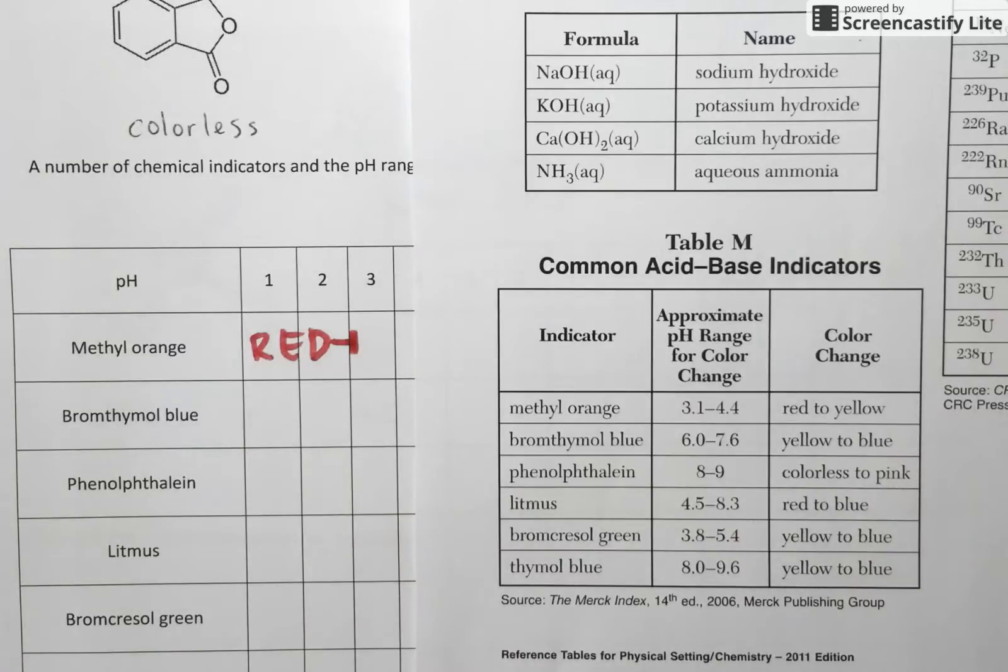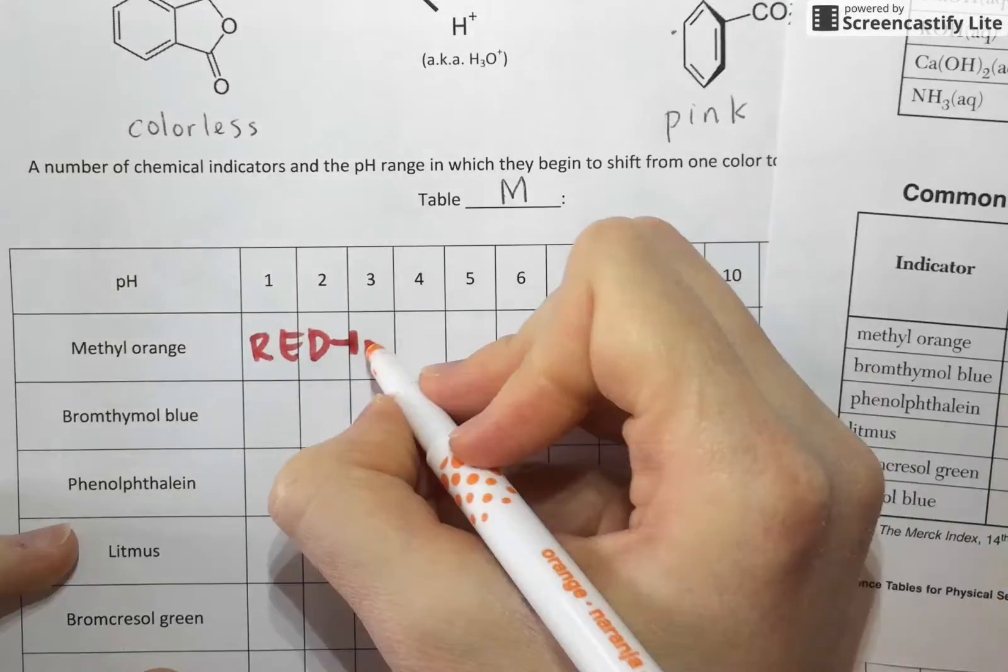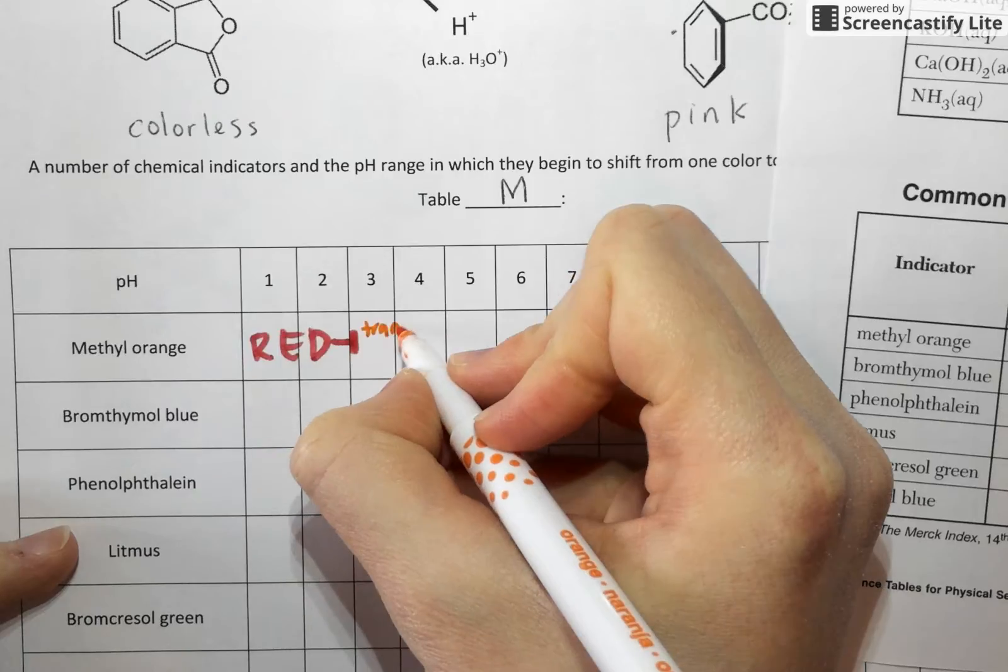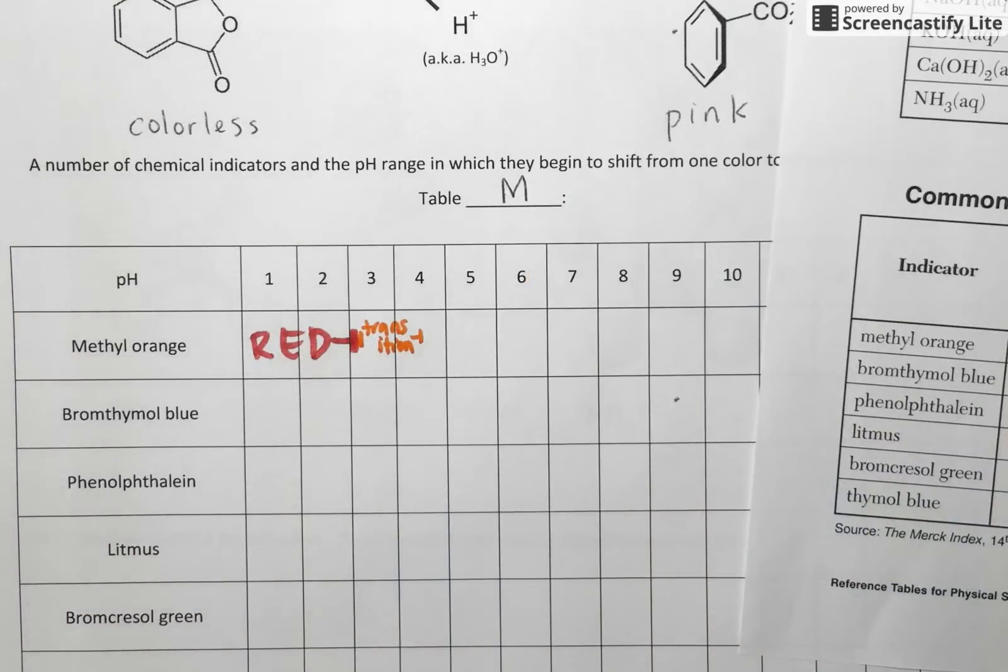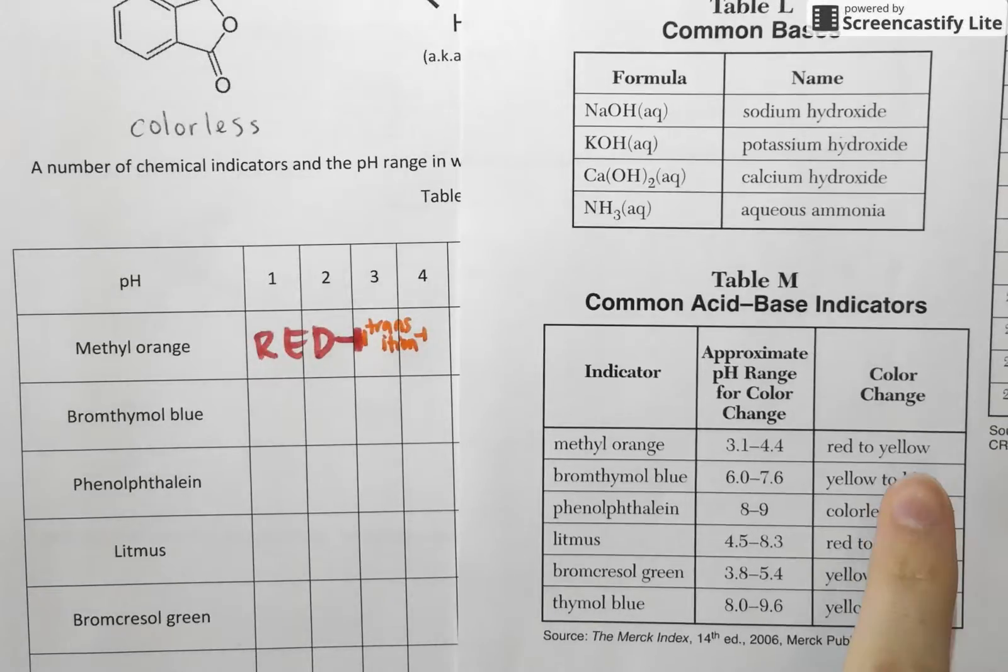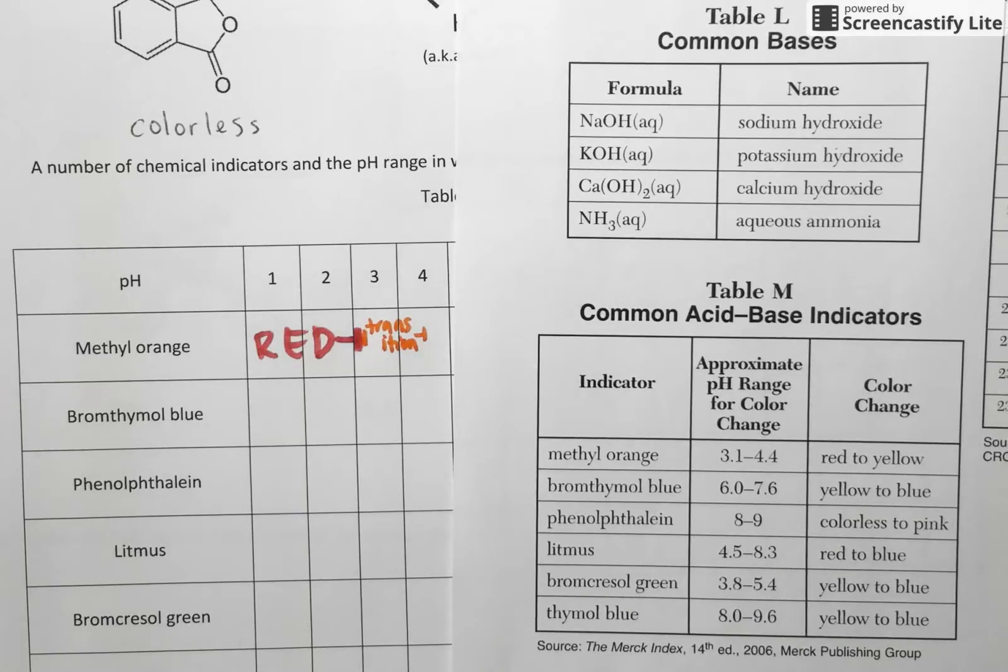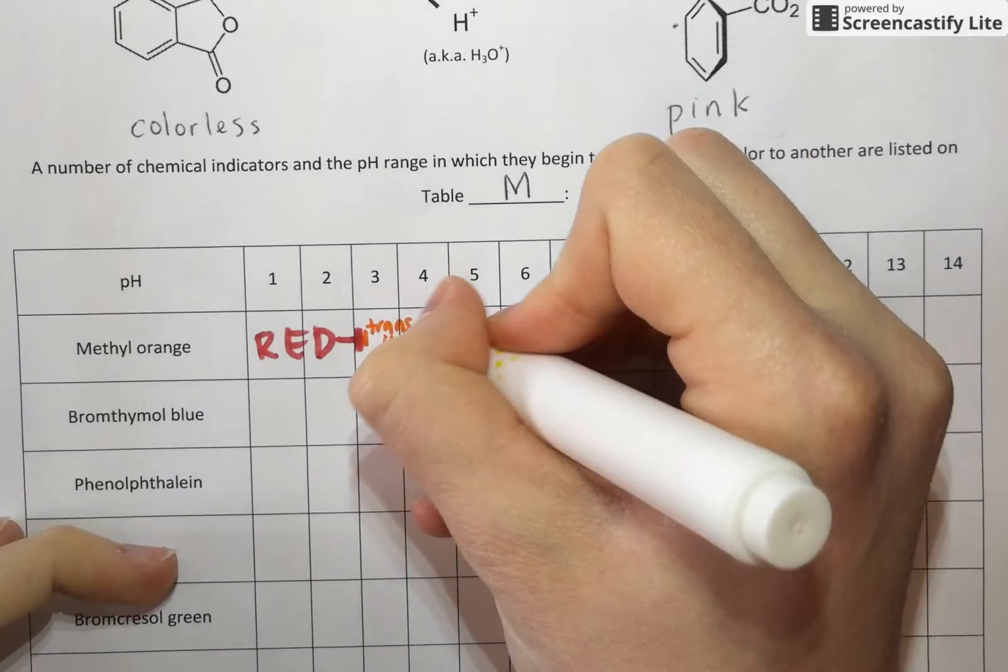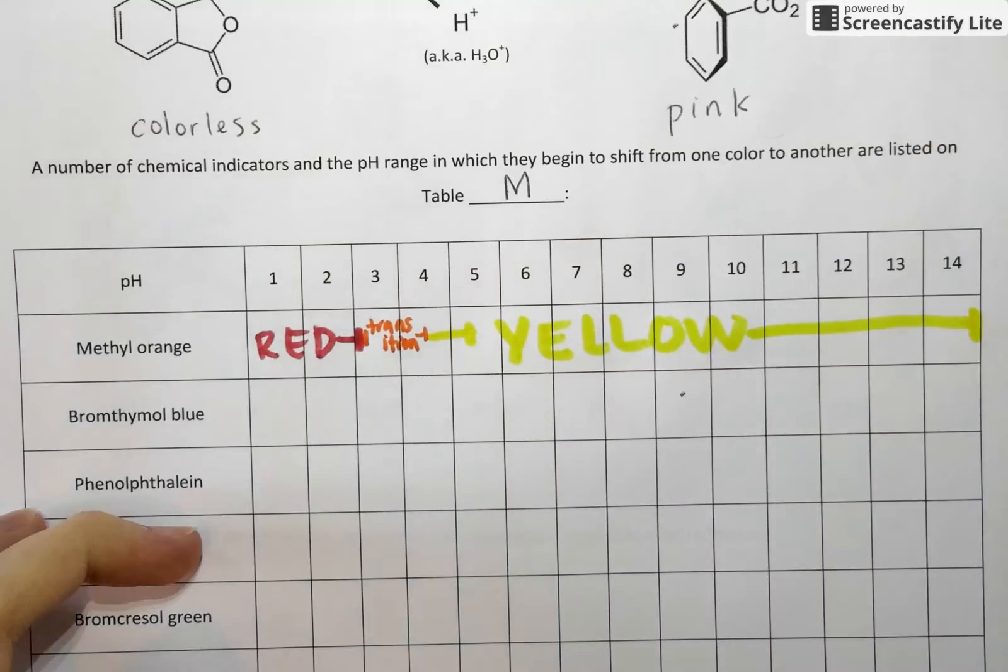At that point, methyl orange starts going through its transition phase and starts trying to change to a yellow color. And that transition kind of lasts between pH of 3.1 and 4.4. So here is our transition between red and yellow. And anything past 4.4 is going to show up as yellow. So if the pH is 5, methyl orange is going to be yellow. If it's 10, it's going to be yellow. If it's 14, it's going to be yellow. So on this table, all I'm going to do is say that from this point forward, that particular indicator will show up as yellow if it's added to solution.